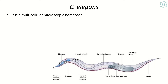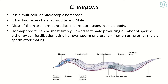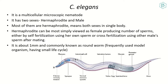C. elegans is a multicellular microscopic nematode. It has two sexes: hermaphrodite and male. Hermaphrodite means both sexes in a single body. The hermaphrodite can mostly be viewed as a female producing sperms, either by self-fertilization — using her own sperm — or cross-fertilization, using sperm from another male after mating.